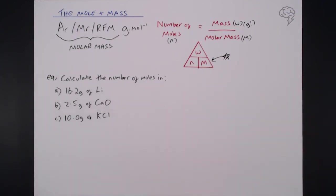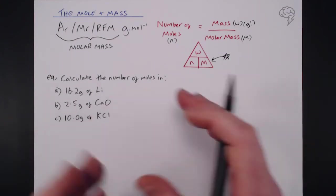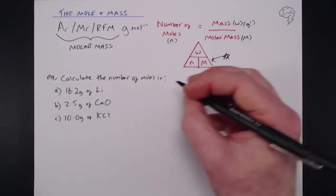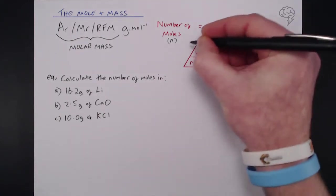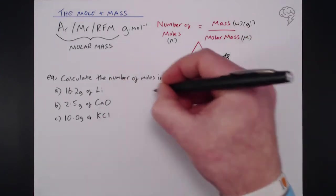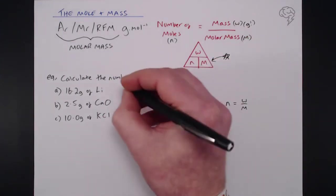So if you want to have a go, pause the video now. So here's how we calculate these. For all of these number of moles equals mass over molar mass using this equation triangle here. So I'm just going to go through the calculations for each of these.